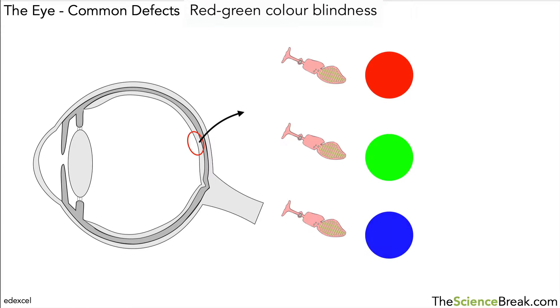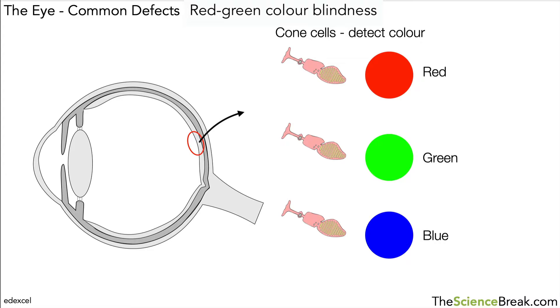They each detect a different colour. Cone cells detect colour and they detect the colours red, green and blue.